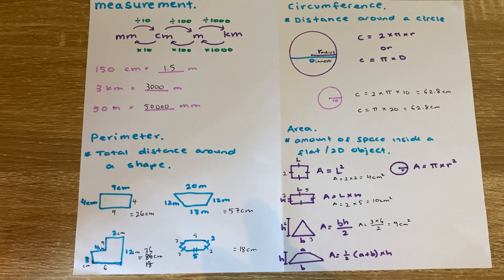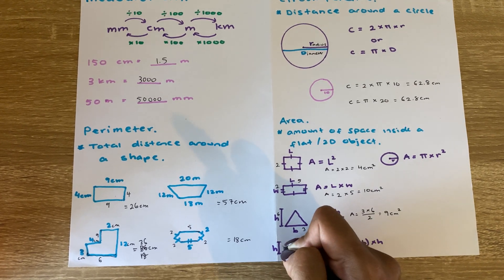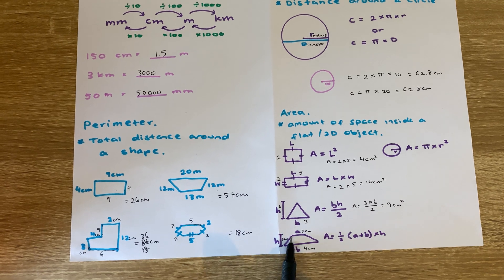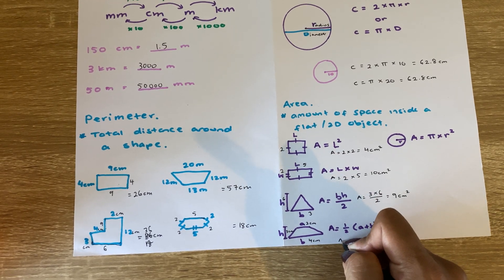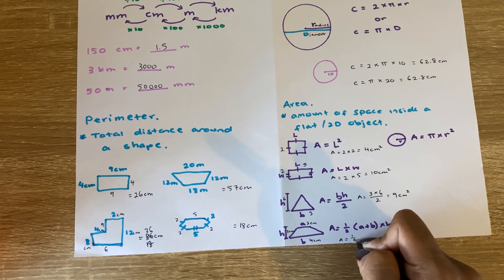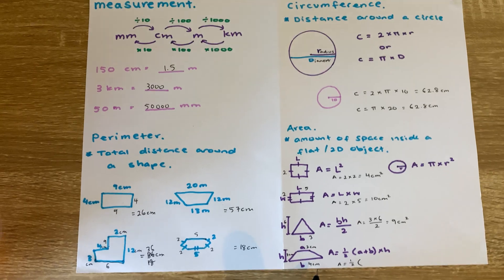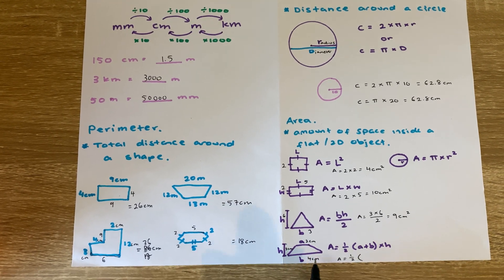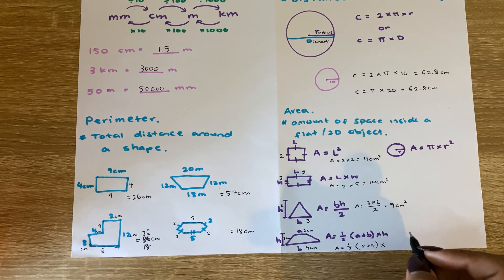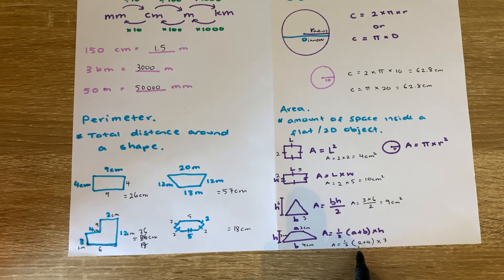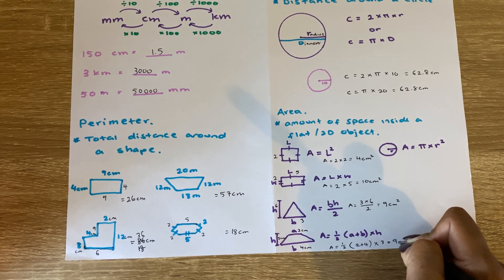For a trapezium, say side a is 2 centimeters, side b is 4 centimeters, and the height is 3 centimeters. The formula is: area equals half multiplied by (a plus b), then multiplied by the height. So half times (2 plus 4) equals half times 6, which is 3, then 3 times 3 equals 9 centimeters squared.